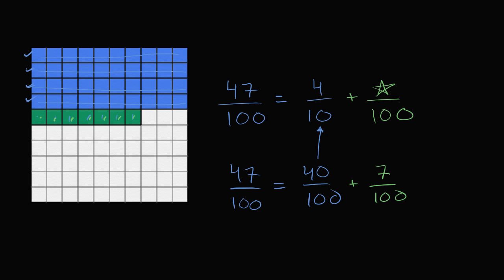One is you could think about dividing this larger square into tenths. So this would be a tenth right over here. That would be a tenth. This would be another tenth. That's 2 tenths. This would be 3 tenths. And all I'm doing here is I'm dividing the larger thing into tenths.